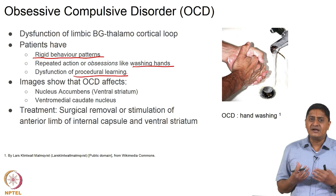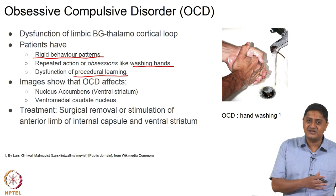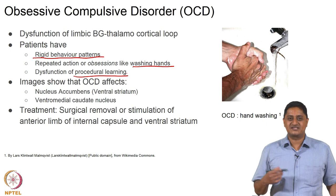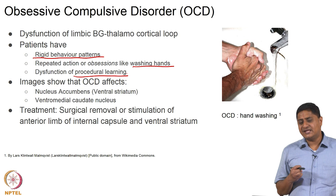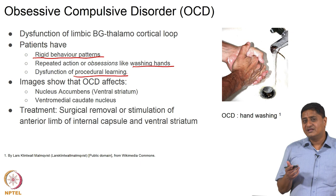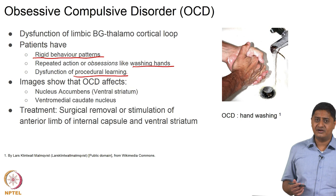Basal Ganglia is a procedural learning engine — it is learning procedures, not just input-output relationships or abstract representations. This is differentiated from factual learning; remembering facts and figures is different from remembering a procedure. Even in motor function, Basal Ganglia is involved in procedural learning. If this procedural learning is compromised in the limbic or executive area, then a disorder such as OCD develops.